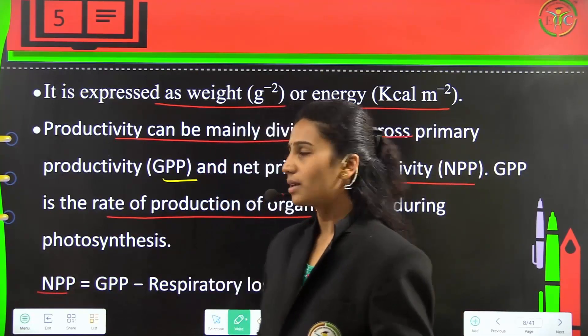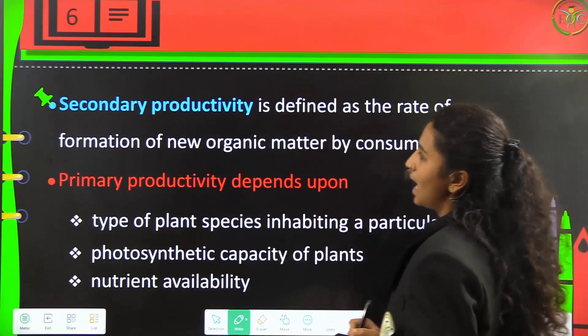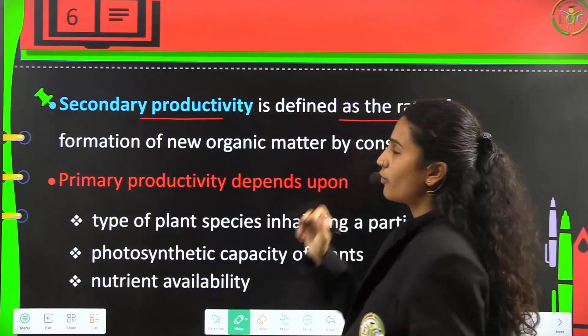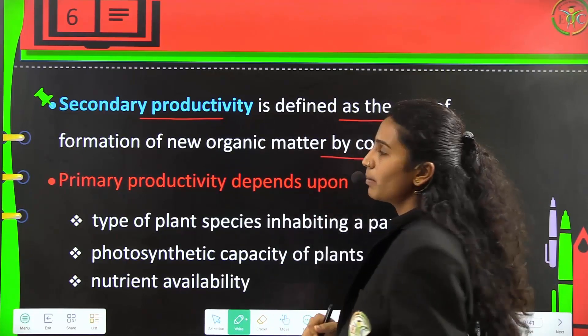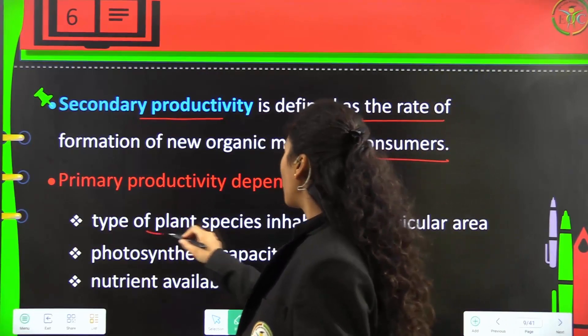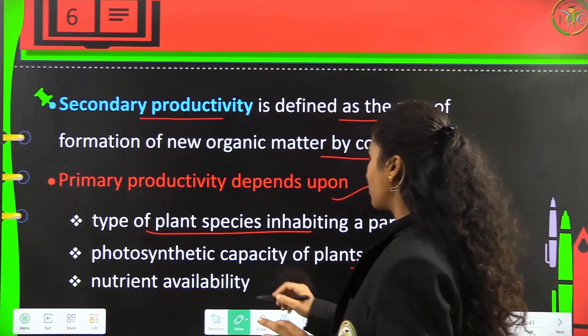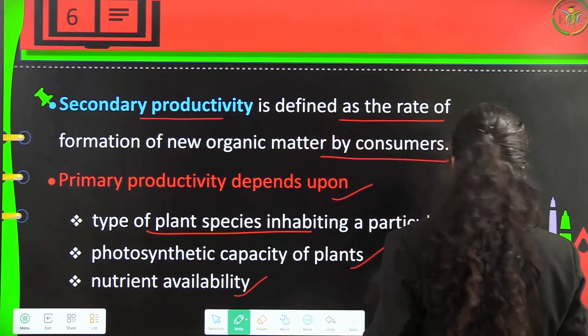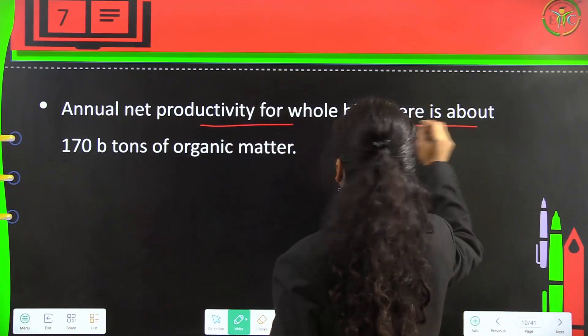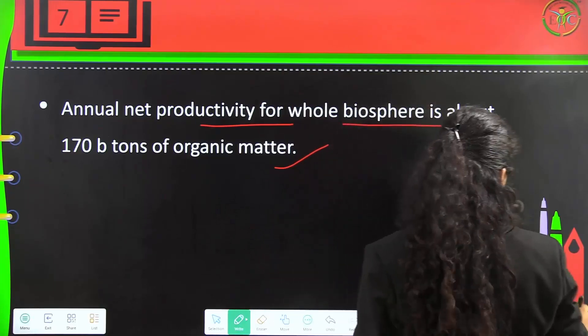NPP is the GPP minus respiratory losses (R). Secondary productivity is defined as the rate of formation of new organic matter by consumers. Primary productivity depends on type of plant species, photosynthetic capacity, and nutrient availability. Annual net productivity for the whole biosphere is about 170 billion tons of organic matter.